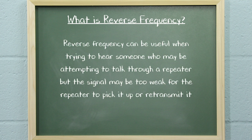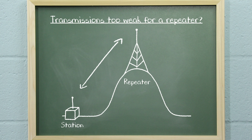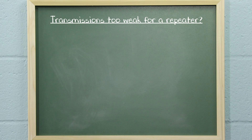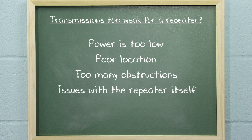Why would you want to do this? It can be particularly useful when trying to hear someone who may be attempting to talk through a repeater, but whose signal may be too weak for the repeater to pick it up and retransmit — yet may still be in range for you to receive directly. For example, another user trying to access your local repeater whose transmission is too weak for the repeater to hear, due to low power, a poor location, or too many obstructions between the radio and the repeater.